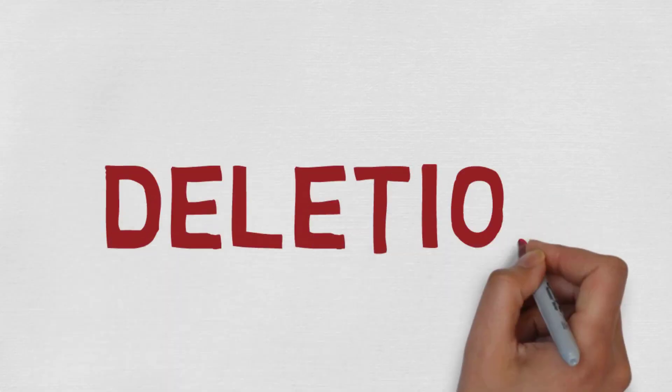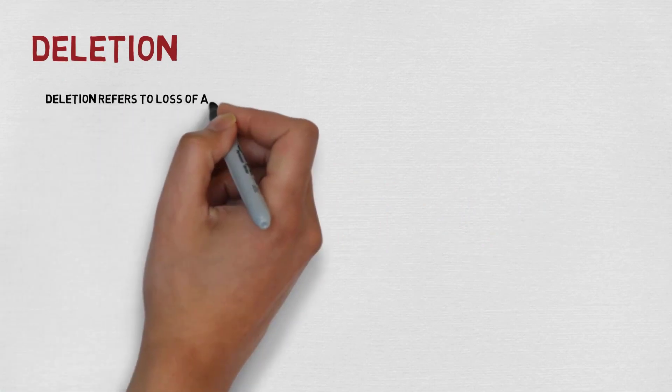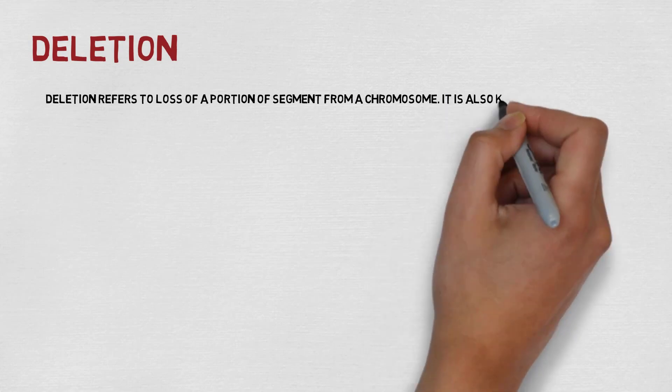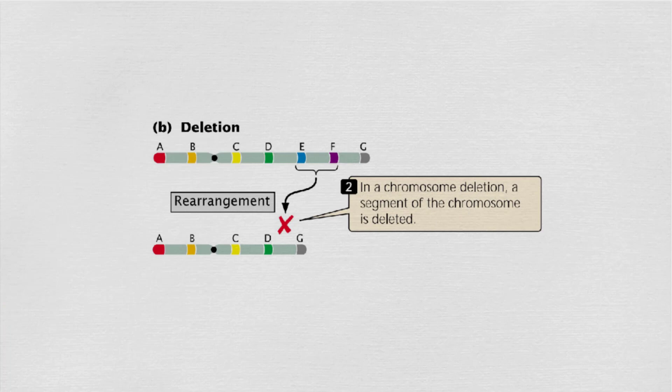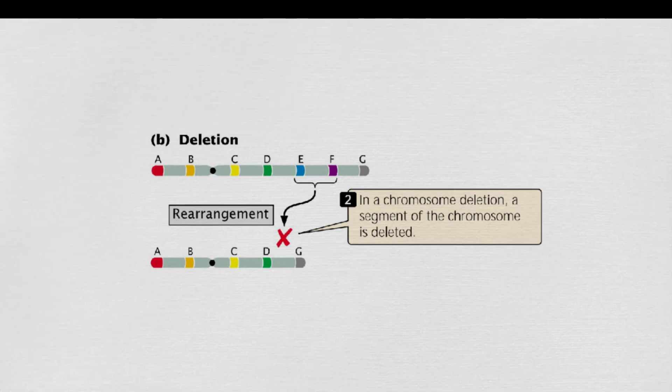So what is deletion? Here, a segment or part of the chromosome gets deleted. It is also known as deficiency. In this diagram, suppose there is a chromosome with segments A B C D E F G. If the E F segment gets deleted, the new chromosome with deletion will be A B C D N G. There may be one or two genes or maybe more than four or five genes in the deleted region.